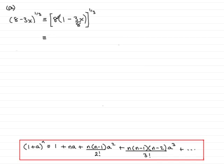When you've got a product of 2 or more bits in here to a power, this is exactly the same as each part to the power. So that's 8 to the power of 1/3 multiplied by 1 minus 3 eighths x, also to the power of 1/3. 8 to the 1/3, that's the cube root of 8, that is 2, so we have 2 there.